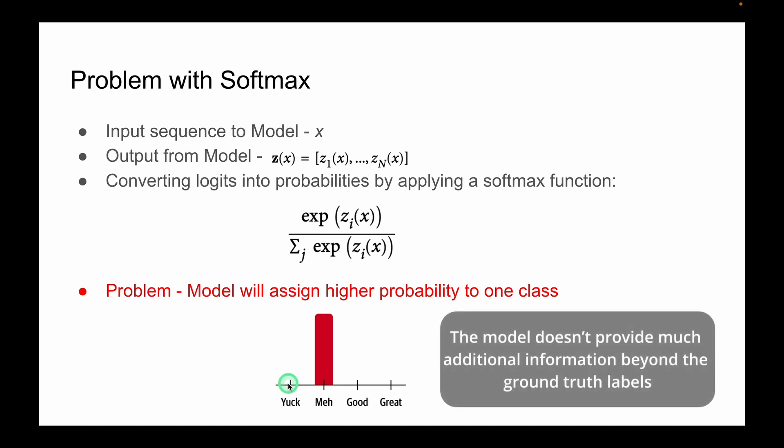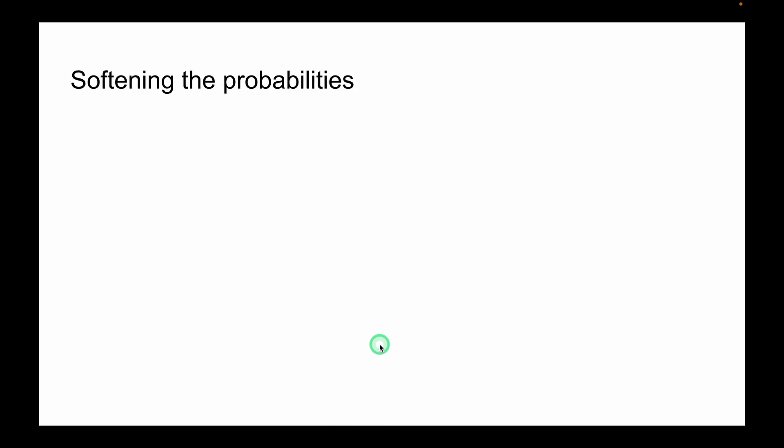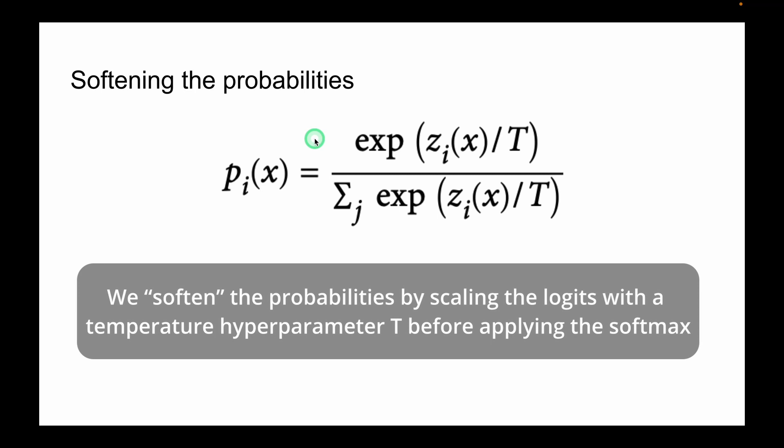In order to solve this problem we soften the probabilities. We soften the probabilities by scaling the logits with a temperature parameter, this capital T, before applying the softmax function.